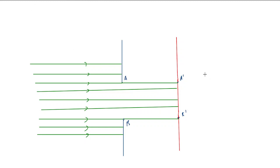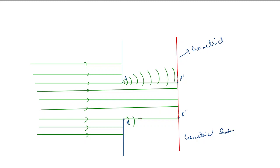The region above A' is the geometrical shadow region, and the region below B' is also a geometrical shadow region. This is what we get only if we assume light to be like a ray. But since light also exhibits wave properties, light would bend at the edges and encroach into the geometrical shadow region, so the brightness would expand beyond A' and B'. In fact, light would be seen from A' to Q'. This encroachment of light into the geometrical shadow region is called diffraction.